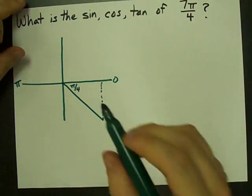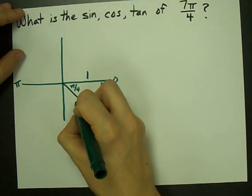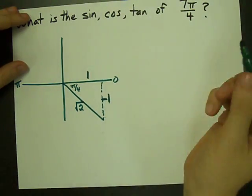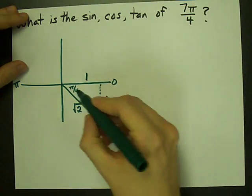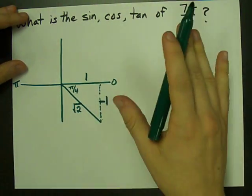That corresponds to the special triangle with side lengths of 1, 1, and root 2. And just be careful, I want you to make this one negative because you're going down. This stays positive because it goes to the right and the hypotenuse is always positive.